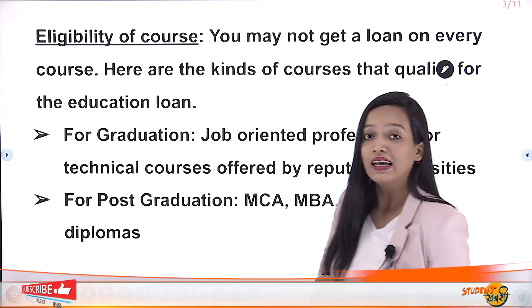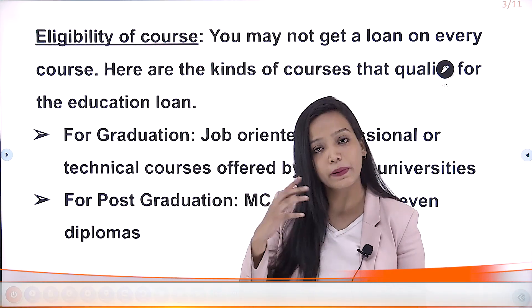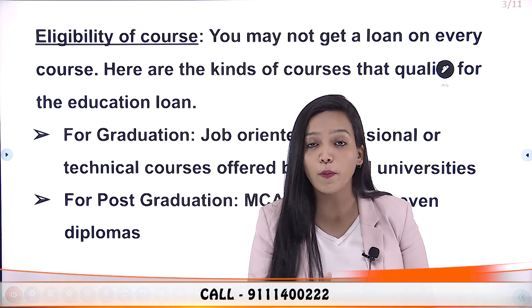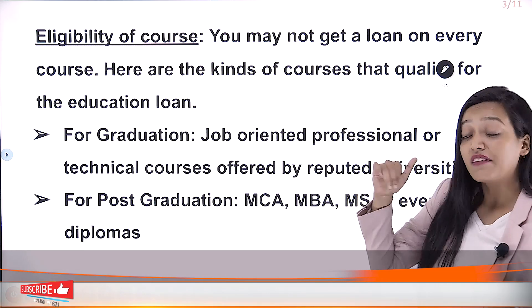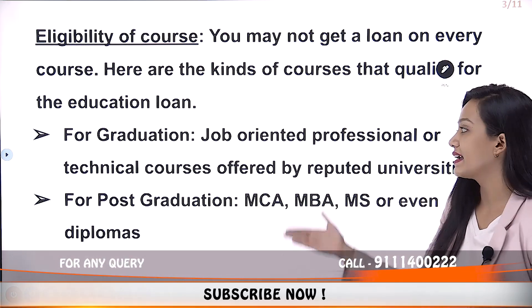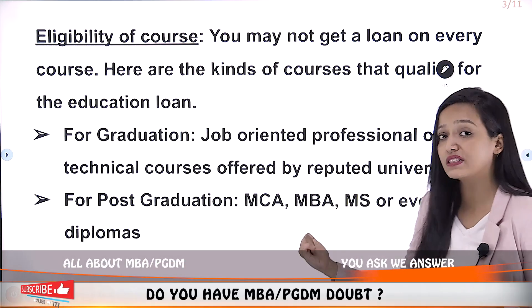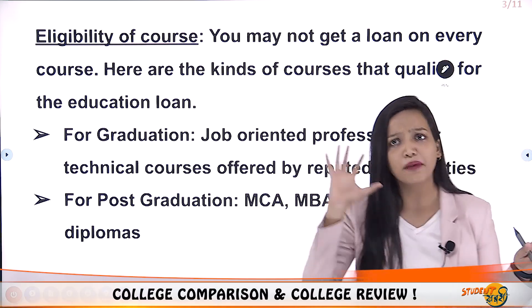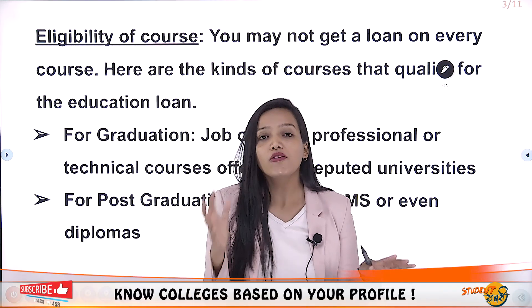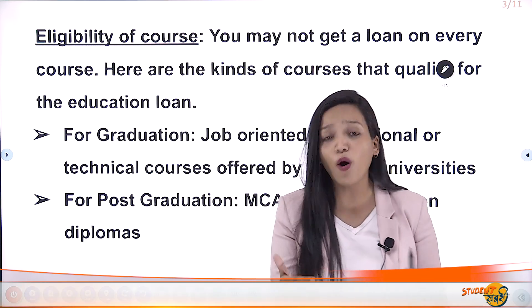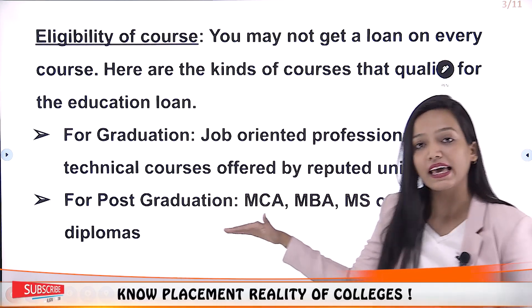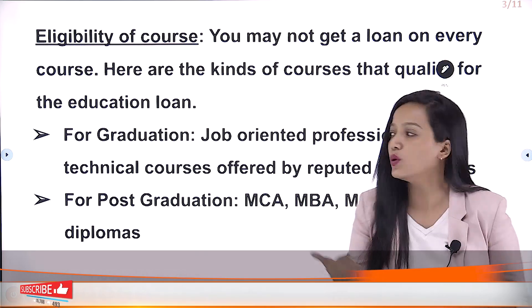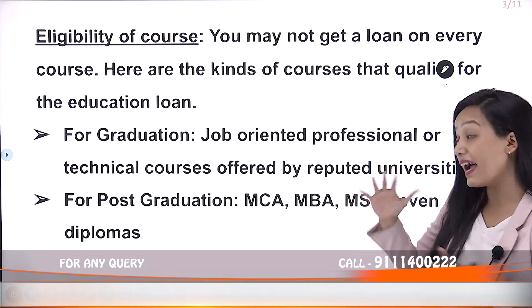The second important thing is eligibility of the course. Your academics should be good and the course should be a professional or technical one — meaning job-oriented. Banks do not give a loan for every course. They are quite specific, as they need to get their money back. For graduation, technical courses include engineering, architecture, and similar fields. Abroad there are many more options — fashion, B.Com, BBA — but banks prefer technical or professional-oriented courses.